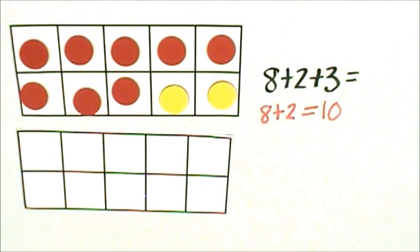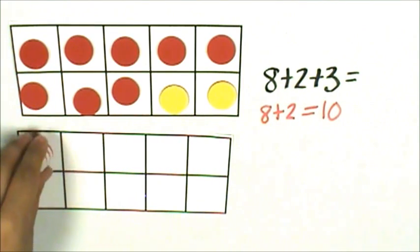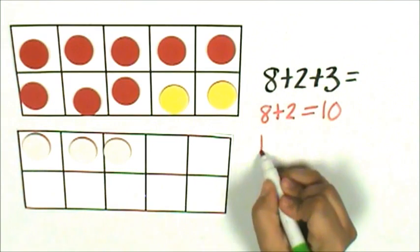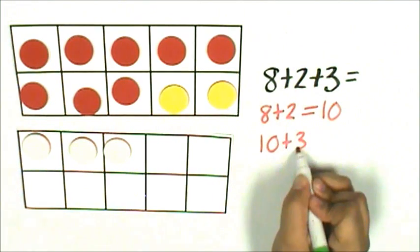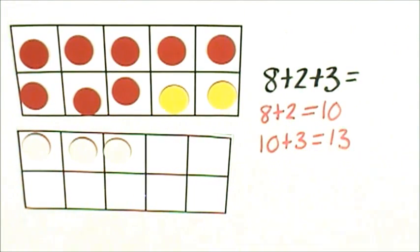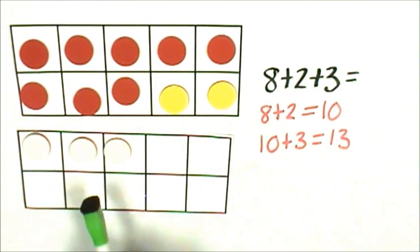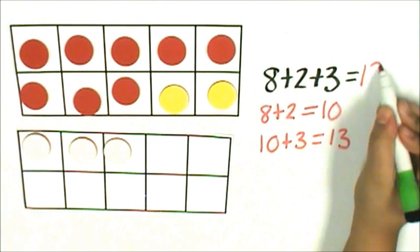Now let's add 3. 10 plus 3 is 11, 12, 13. That means 8 plus 2 plus 3 is 13.